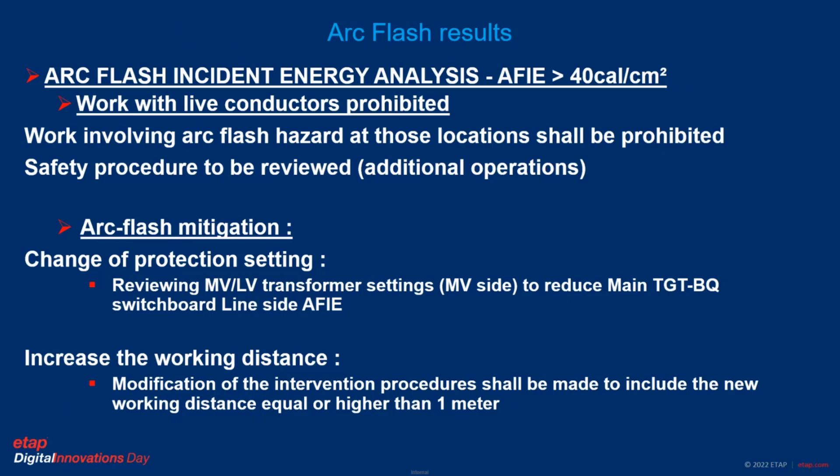Regarding working places with values higher than 40 cal/cm², one approach recommended by the NFPA is to simply state that any work involving arc flash hazards at this location should be prohibited. Another possible approach is to work closely with the customer — engaging a discussion about the details of the safety procedures and potentially modifying them. For example, considering additional disconnection steps, such as providing a disconnection at the primary side of the transformer before proceeding to the withdrawing of the main LV circuit breakers.